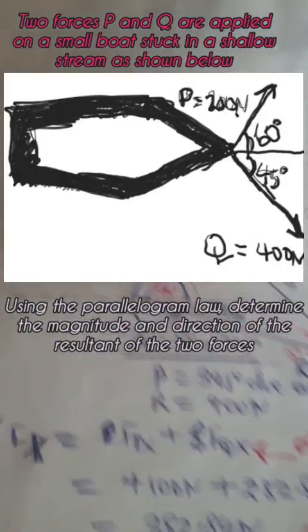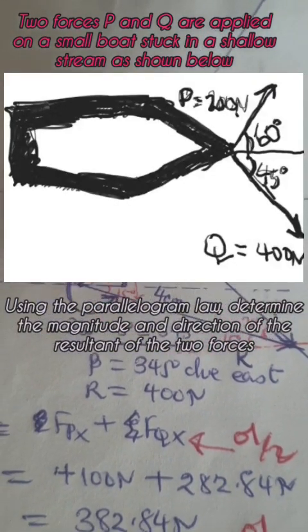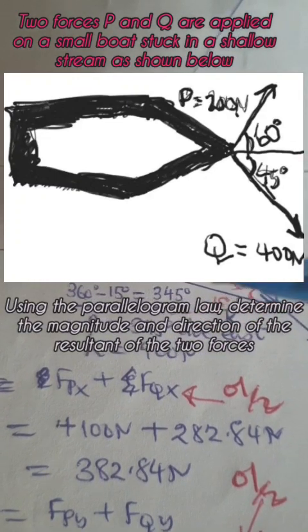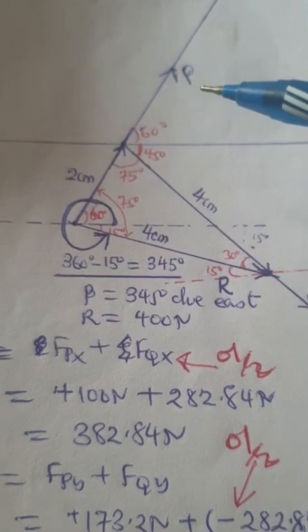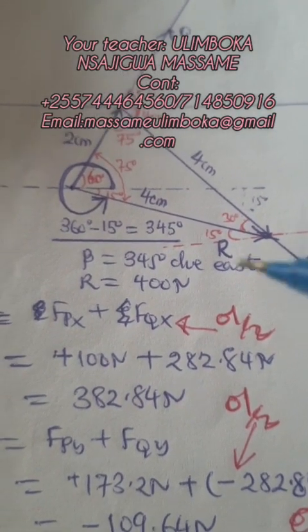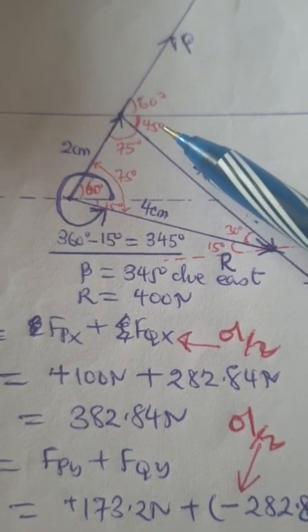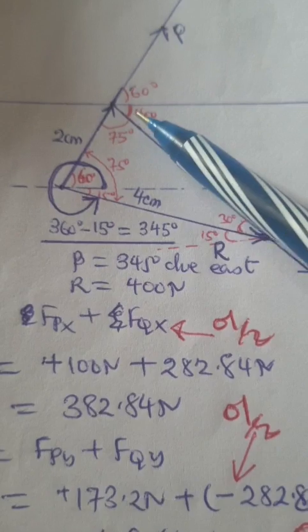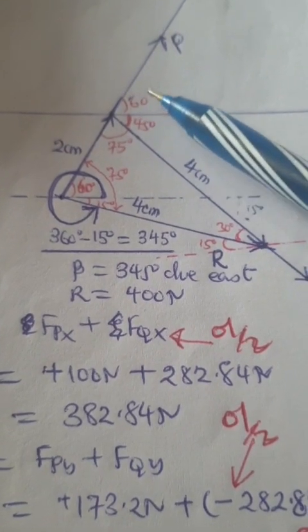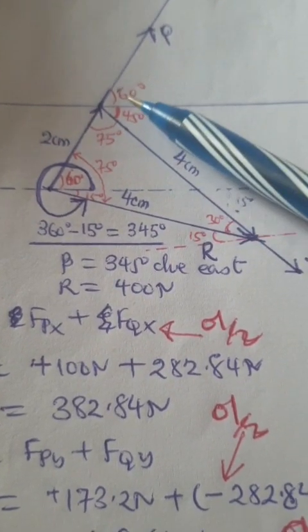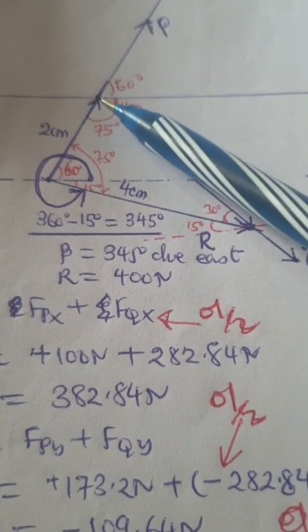This is a vector question. We've given vector P and vector Q. Vector Q is at 45 degrees along the horizontal and vector P is 60 degrees along the horizontal.